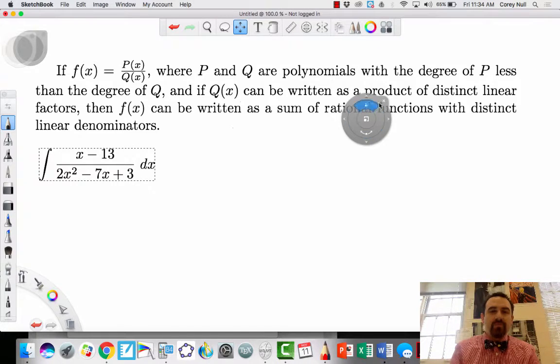So here's the statement about partial fractions. If f(x) is equal to the ratio of P(x) over Q(x), where P and Q are polynomials, and the degree of the numerator is less than the degree of the denominator, and if the denominator can be written as a product of distinct linear factors—what that means is it's factorable, and each factor is simply a linear part, and there's no repeated factors—then f(x) can be written as a sum of rational functions with distinct linear denominators.